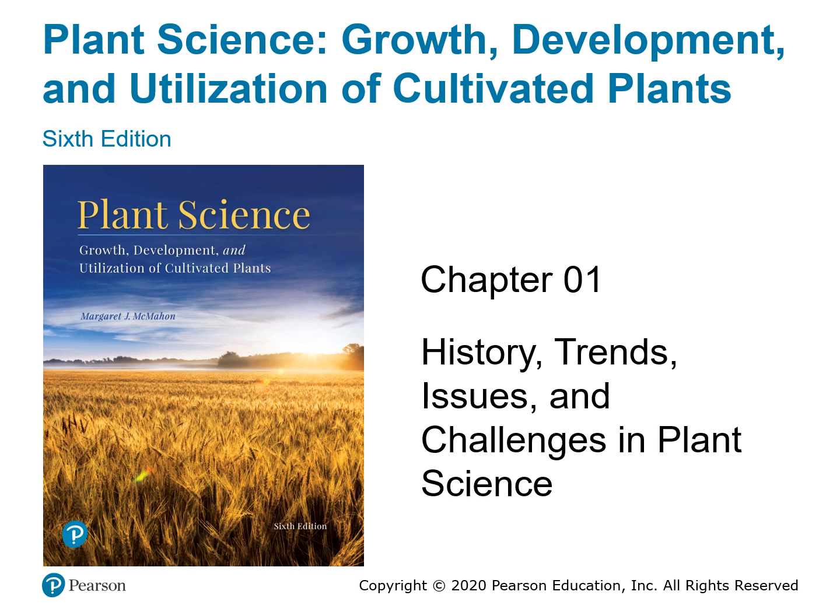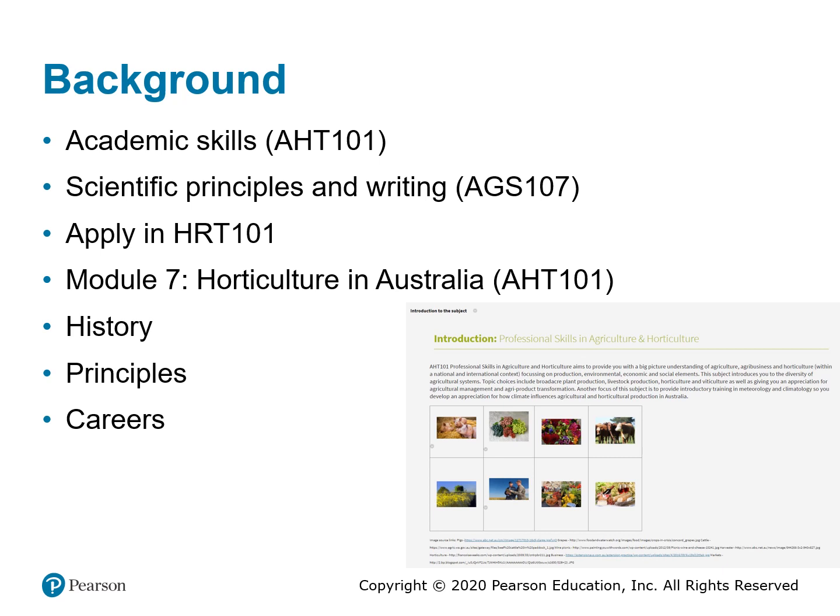It's important to know that this subject builds on previous subjects. All academic skills learned in the previous subject AHT 101 are to be continued, including essay structure, paragraph structure, referencing both in-text and reference lists, and use of visuals in assignments according to the APA system. The scientific principles and scientific writing methods learned in AGS 107 are also to be applied in HRT 101.